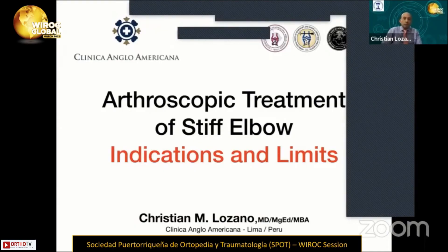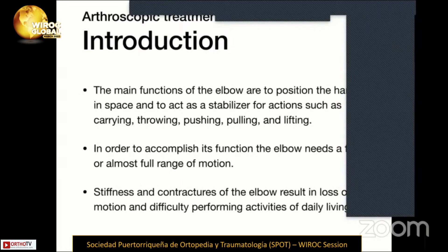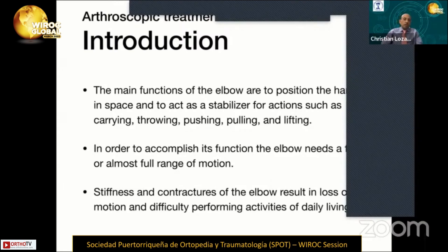I'm going to talk about the arthroscopic treatment of stiff elbow — what are the indications and what are our limits. I have no conflicts of interest. The main function of the elbow is to position the hand in space and to serve as a stabilizer for actions such as carrying, throwing, pushing, pulling, and lifting. Stiffness and contracture of the elbow results in loss of motion and difficulty performing activities of daily living.